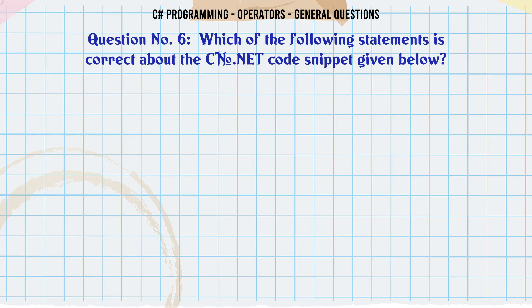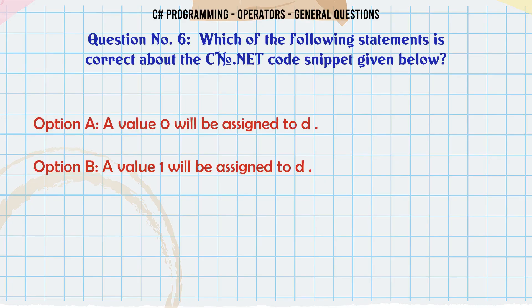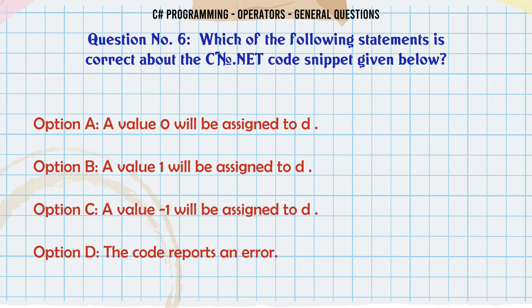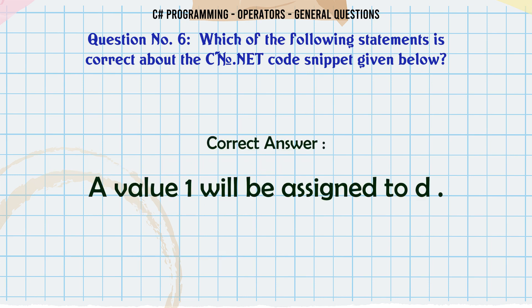Which of the following statements is correct about the C.NET code snippet given below? A: A value 0 will be assigned to D. B: A value 1 will be assigned to D. C: A value -1 will be assigned to D. D: The code reports an error. The correct answer is: a value 1 will be assigned to D.